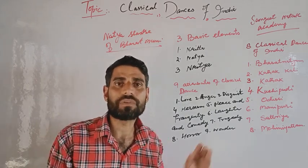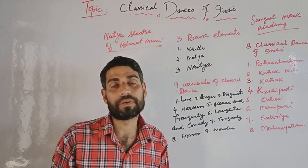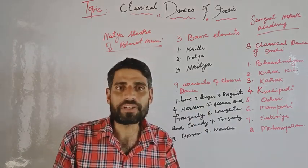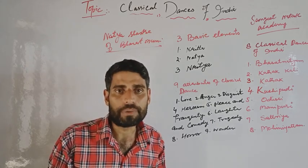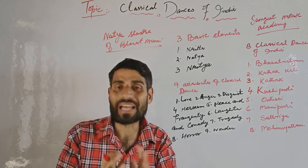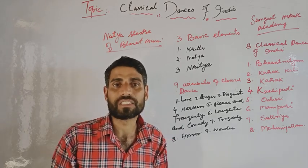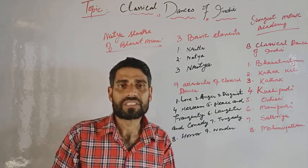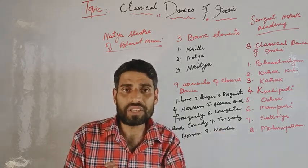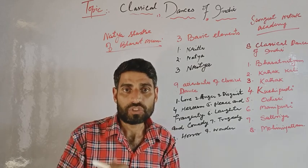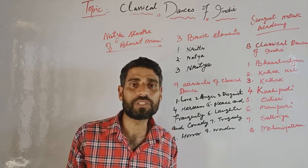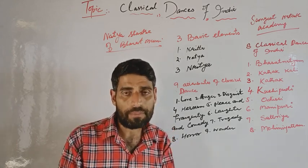During ancient times, this dance was used for purely religious purposes. Later it was used for entertaining purposes. The three basic elements of classical dance are: first, Nritta; second, Natya; and third, Nritya. Nritta simply means pure dance without mood or expression. Natya means dramatic representation.